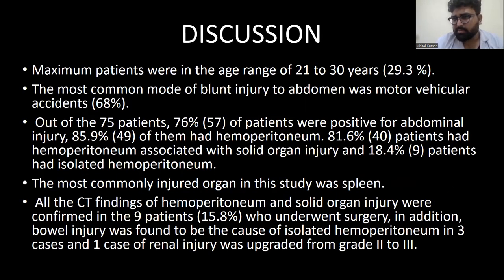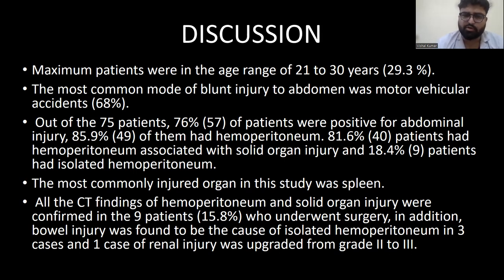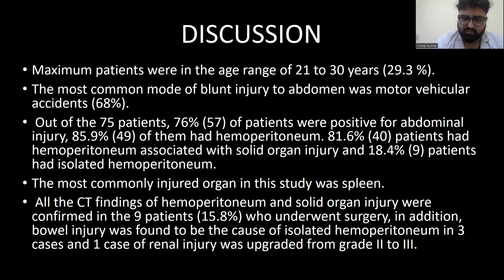In summary, the maximum number of patients were in the younger age group, male predominant, associated mostly with road traffic accidents, and the majority had abdominal injury with hemoperitoneum. Isolated hemoperitoneum was diagnosed in a few cases. The most commonly injured organ was the spleen, and CT findings of hemoperitoneum were confirmed surgically. Additional bowel injury was found in three cases of isolated hemoperitoneum.